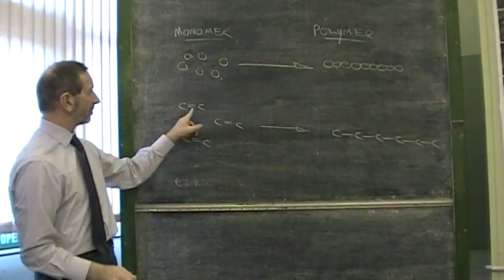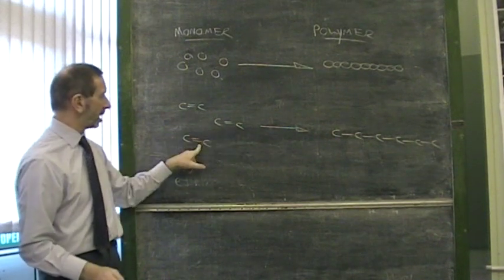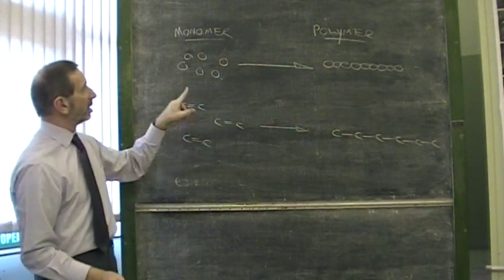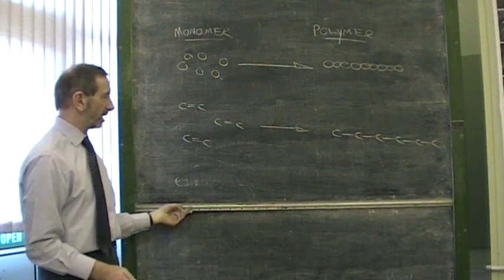So the secret is look for double bonds. If the double bonds are present in the monomer, the process will be addition polymerization.